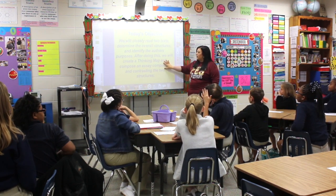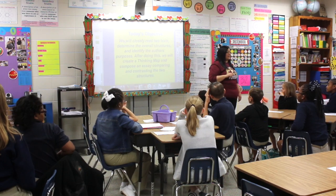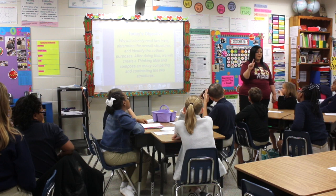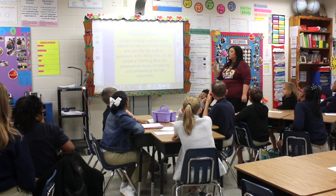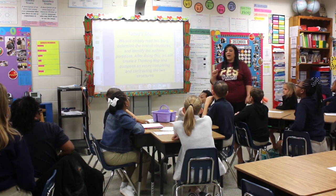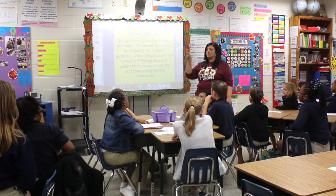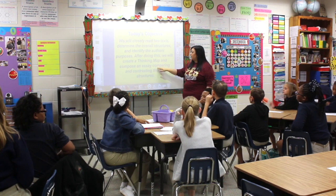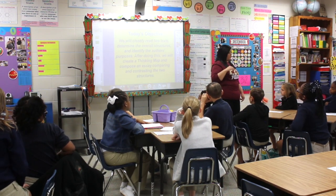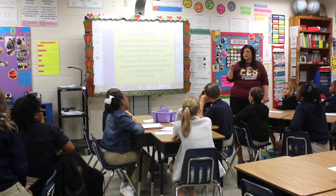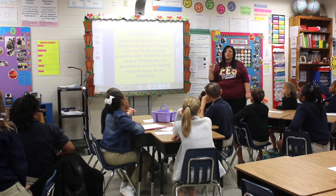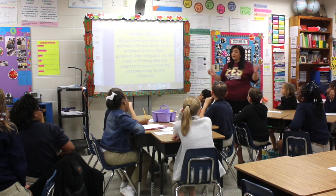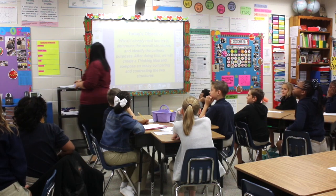At the end of our lesson, we're also going to draw a thinking map. You are going to have a choice between a Venn diagram or a double bubble — we've practiced those before. You're going to compare and contrast the two texts that we're going to read today. Then we're going to compose our essay that we've been working on for a while. In our essay, we're going to compare and contrast the text structures using our thinking map. Are we good so far? Okay, let's move on.